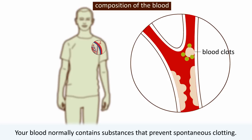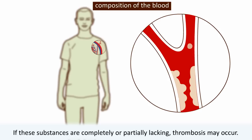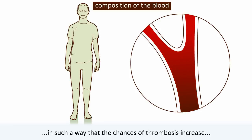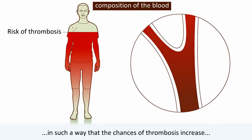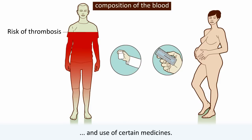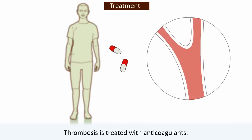Your blood normally contains substances that prevent spontaneous clotting. If these substances are completely or partially lacking, thrombosis may occur. There are also circumstances that change the composition of your blood in such a way that the chances of thrombosis increase — for example, pregnancy, use of oral contraceptives, and use of certain medicines.